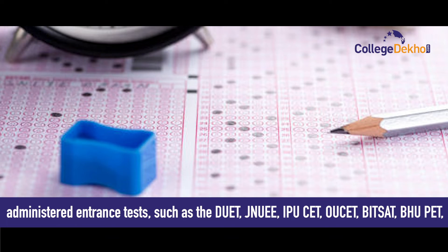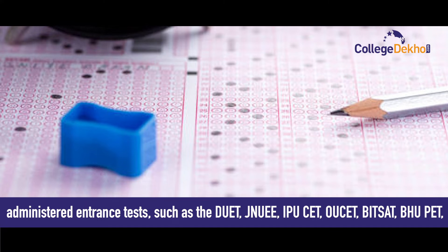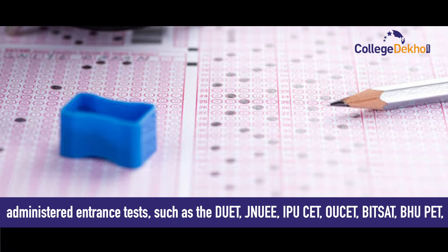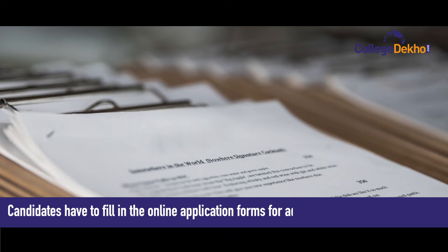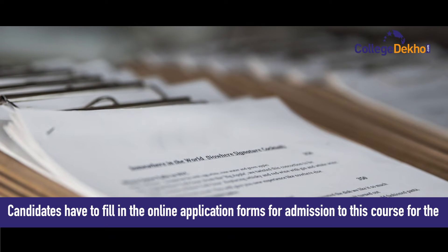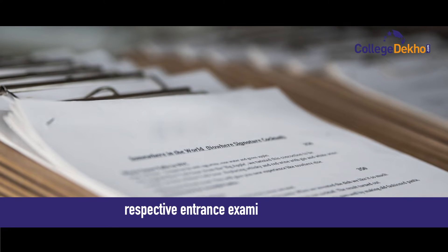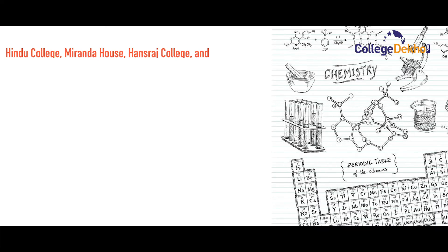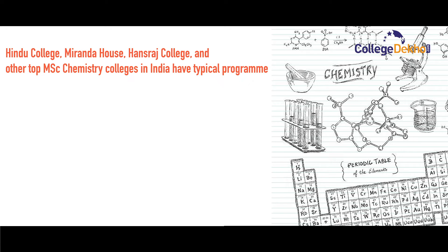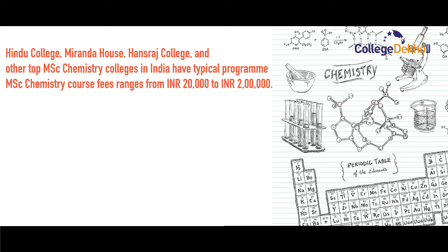MSc Chemistry admissions to top colleges is granted on the basis of administered entrance tests such as DUET, JNUEE, IPU CET, OU SET, BIT SET, and BHUPET. Candidates have to fill in the online application form for the admission. Hindu College, Miranda House, Hans Raj College and other top MSc colleges in India have typical program course fee ranging from 20,000 to 2 lakh.